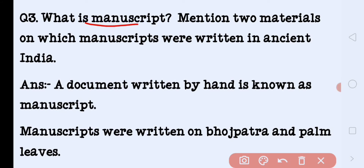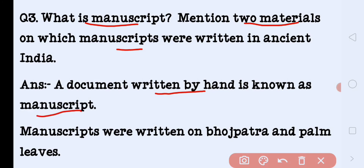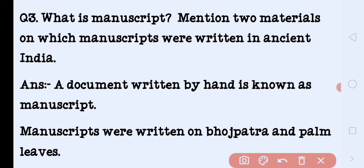What is a manuscript? Mention two materials on which manuscripts were written in ancient times. Documents written by hand are known as manuscripts. Manuscripts were written on birch bark and palm leaves.